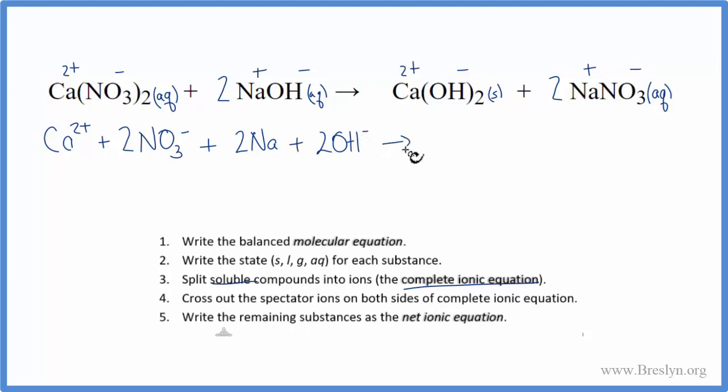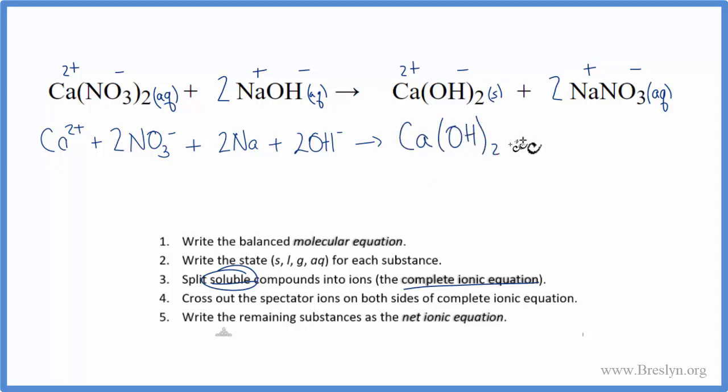Those are the reactants. I'm going to shrink this a little bit. And then on the product side, remember we said soluble compounds. Soluble means it's AQ, dissolved in water. So calcium hydroxide has an S after it. It's a solid, so it won't break apart. So we're going to write Ca(OH)2. Put our S after it there. Solid. So it stays together.